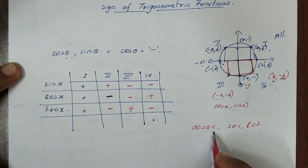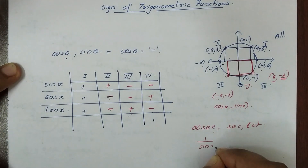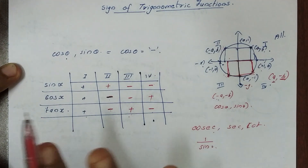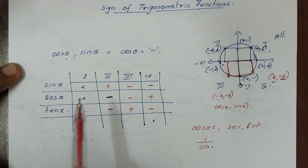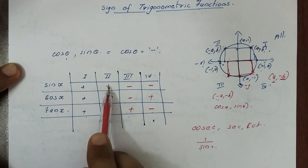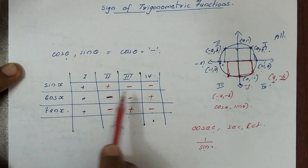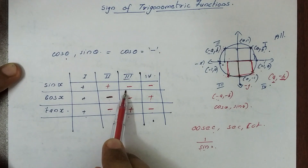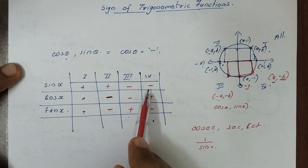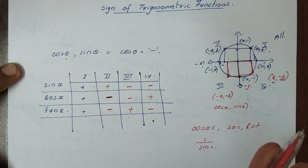What about the reciprocal functions? 1 by sin — you can write for the first quadrant, second quadrant is positive, so 1 by sin is positive. Here we have 1 by a negative quantity, so the answer is negative.